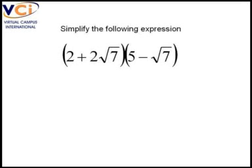In order to simplify this expression, we need to multiply the brackets out. Now what we'll do is take each term in the first bracket and draw an arrow to each term in the second bracket.